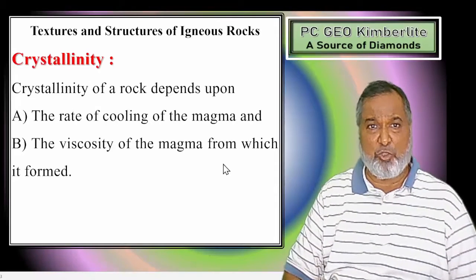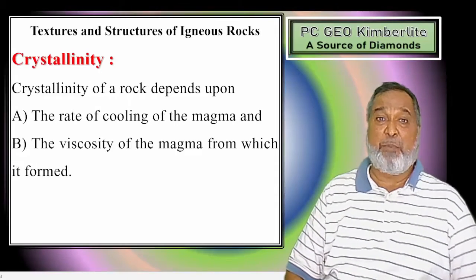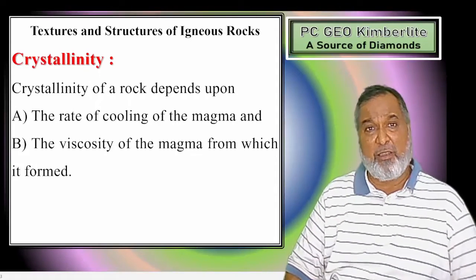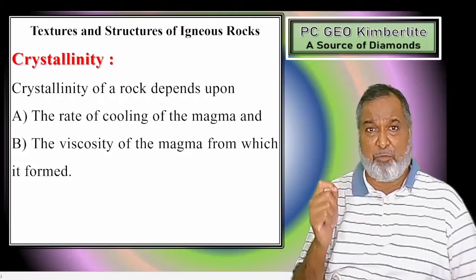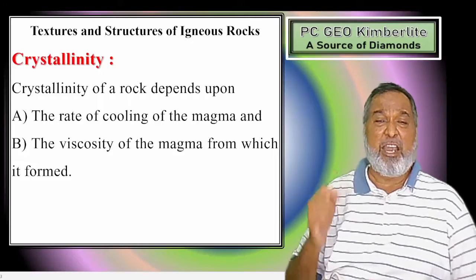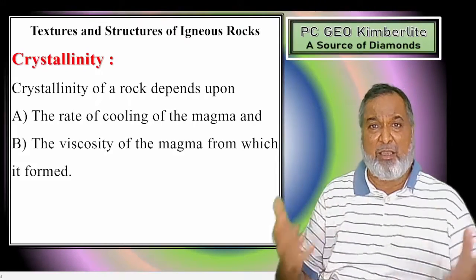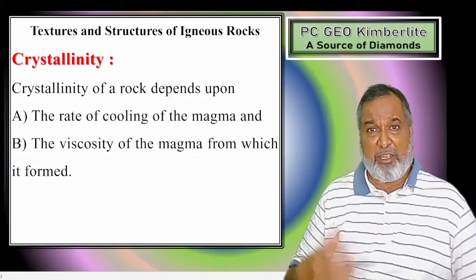The significance: crystallinity of a rock depends upon two important factors. The first factor is the rate of cooling of magma as well as lava. The second important factor is the viscosity of the magma.